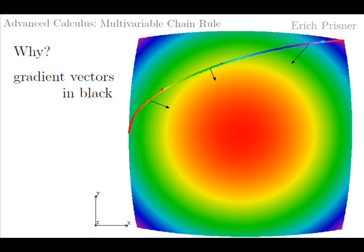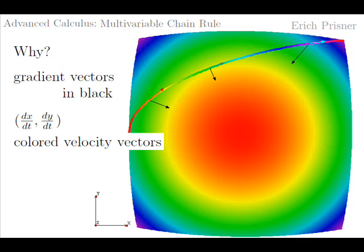Why are the formulas true? Remember that the gradient vector points in the direction where one gains the most height, and its magnitude is the maximum height gain per unit when moving one unit in the xy-plane. The black arrows show a few gradient vectors in our example when we look at the graph from above. For the parametric curve g, the vector (dx/dt, dy/dt) is the velocity vector when moving on the curve — three examples are also shown as colored arrows.